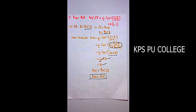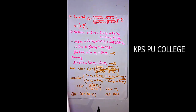Question 10: Prove that cos⁻¹[(√(1+sinx) + √(1-sinx)) / (√(1+sinx) - √(1-sinx))] = x/2, where x belongs to (0, π/4).